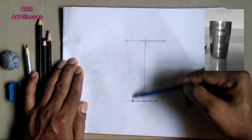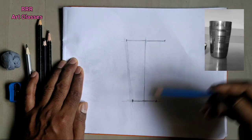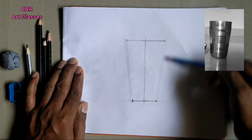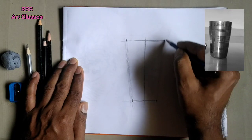Now join both the points from top to bottom on both the sides. You can draw with a few sketchy lines, no need to draw a single line.